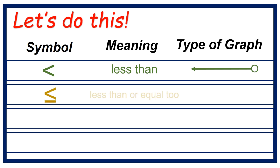Second symbol — its meaning is less than or equal to. The type of graph: closed circle, arrow going to the left. Just like the symbol, the point of the symbol also goes to the left.